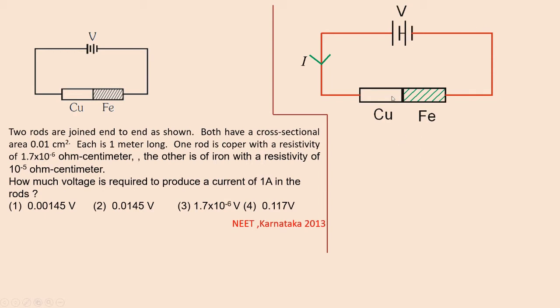And you can apply Ohm's law for copper, also for iron. We know Ohm's law as V = IR. So voltage across copper, say V₁, is IR₁.